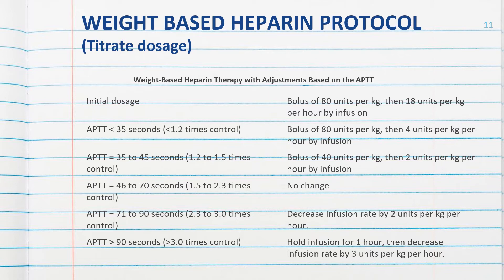In most hospitals, the physician will order a weight-based heparin protocol. This policy will be in your policy manual with instructions on how to enact the protocol. We will be adjusting the dosage of heparin based on the patient's PTT value. The protocol is based on the patient's weight in kilograms. When the PTT value comes back, you look at that value and the protocol tells you what adjustment to make on the heparin infusion.